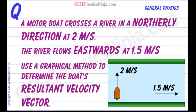A motorboat crosses a river in a northerly direction at 2 meters per second. Here it is going across the river at 2 meters per second. So this is a velocity because it has both direction and size.